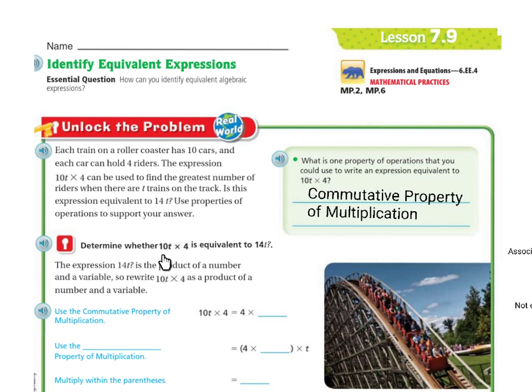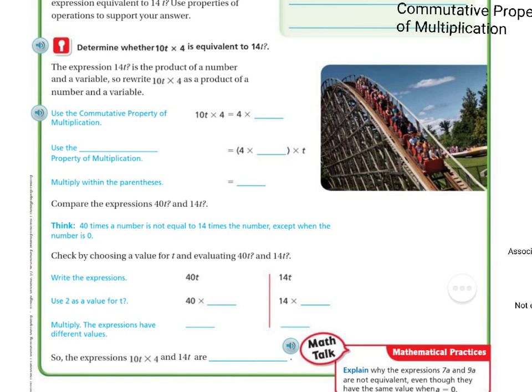Let's determine whether 10T times 4 is equivalent to 14T. The expression 14T is the product of a number and a variable, so let's rewrite 10T times 4 as a product of a number and a variable. If we use the Commutative Property, then we have 10T times 4, which should equal 4 times 10T.